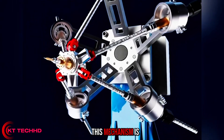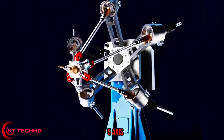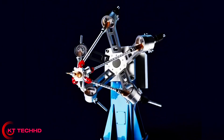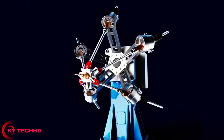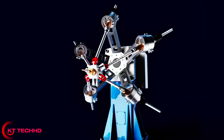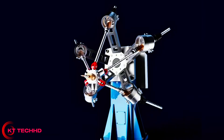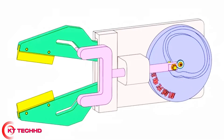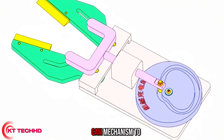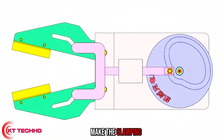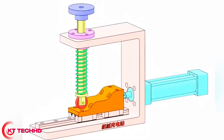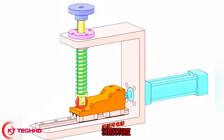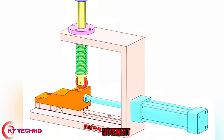This mechanism is used in robot 5-axis applications. Use the moving cam mechanism to make a clamping mechanism. Use the sliding cam structure to create a pan-down movement.